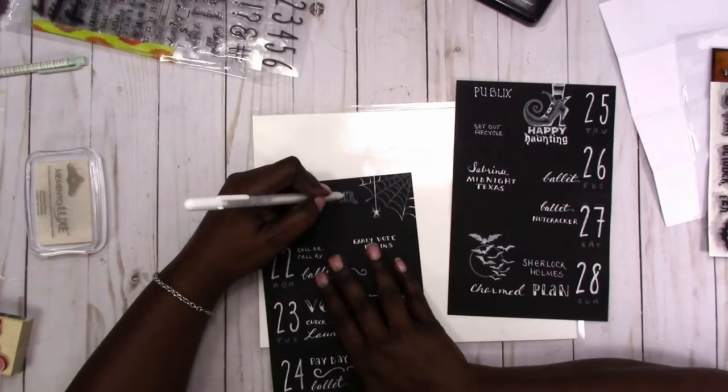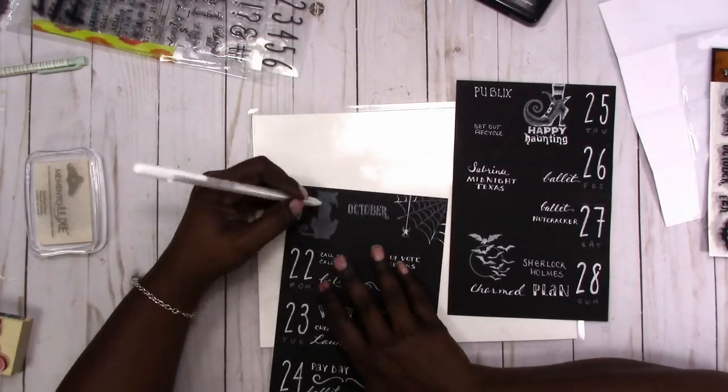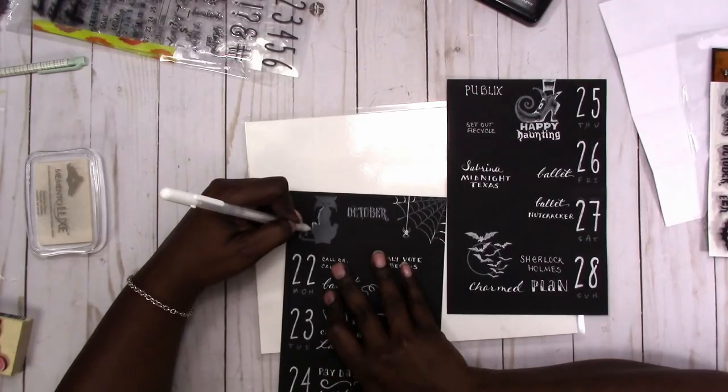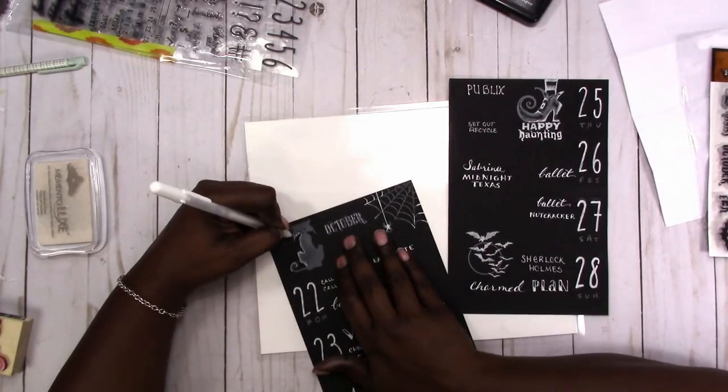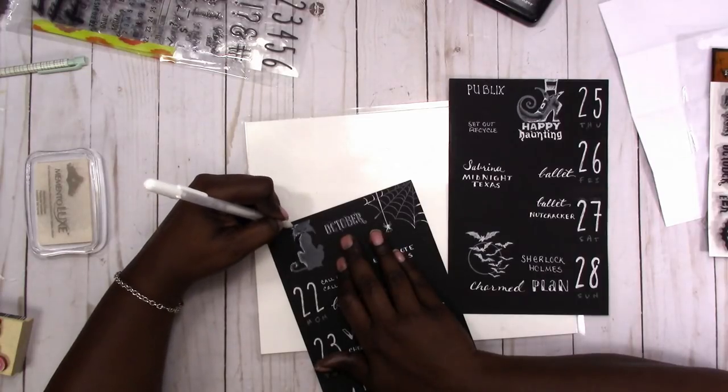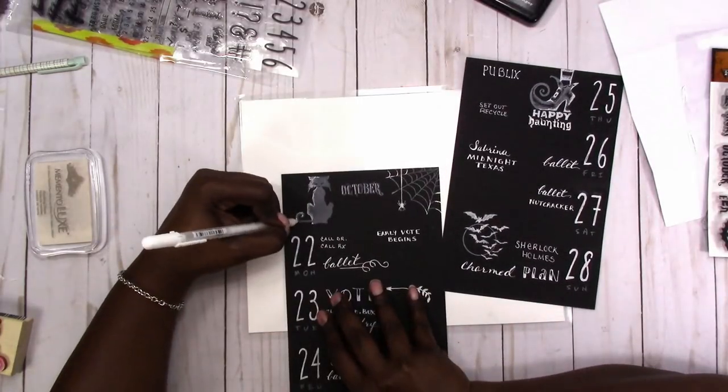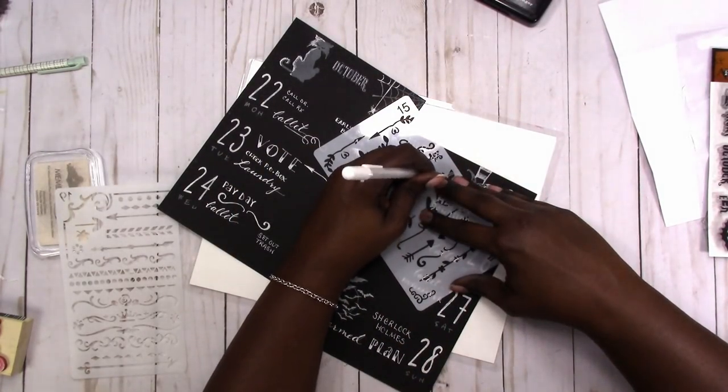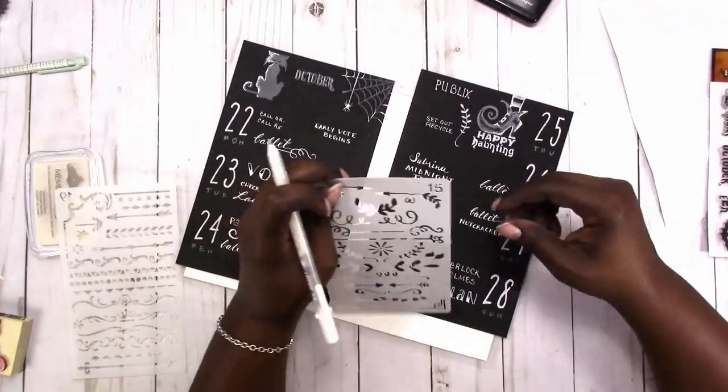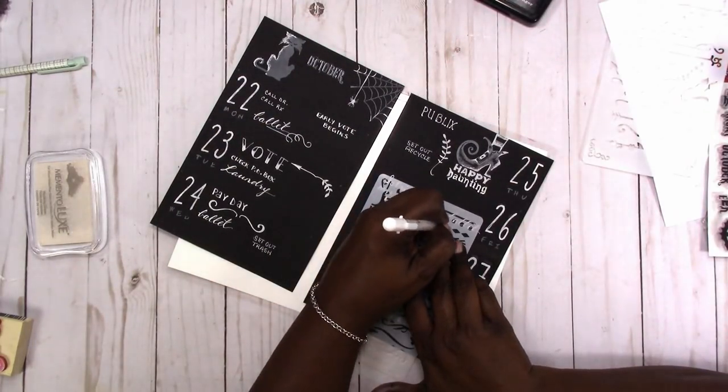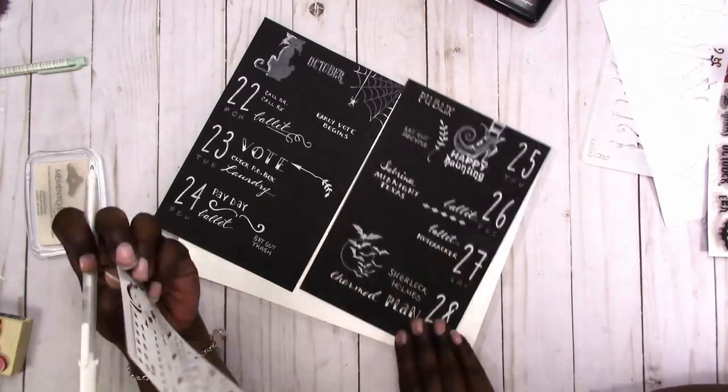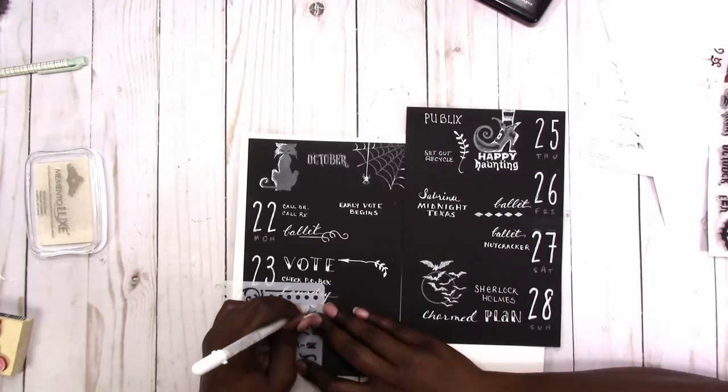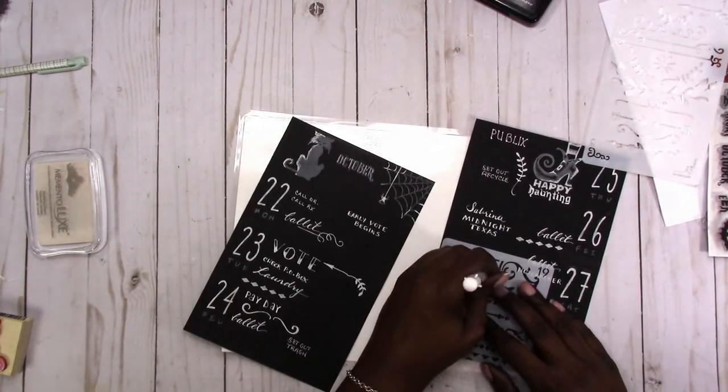I'm just going in with the gel pen again and highlighting just the edges of the word October. I'm kind of doing the same thing with the cat, just highlighting the one edge of the cat so that it kind of looks like the moon is off to the left shining on those things. That's kind of what I thought when I did that. Then I'm adding a few more flourishes just for interest and to help divide the space. I'm using these diamond-shaped dividers which I thought were perfect for this spread to kind of divide things up a little more.